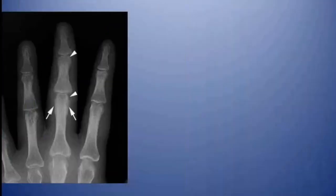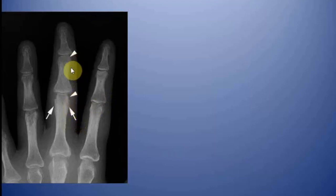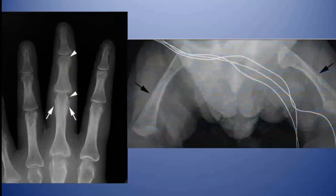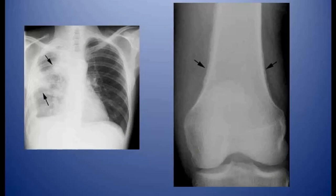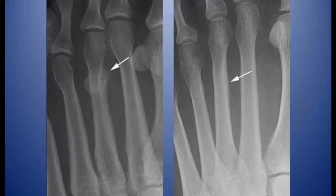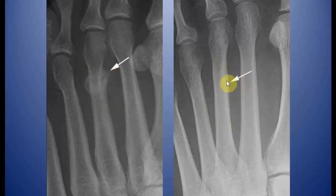Apart from tumors, multiple other entities can lead to periosteal reaction. This case of psoriatic arthritis shows thick solid periosteal reaction along with erosion. This radiograph of an infant shows physiological periostitis involving both femurs. This case of bronchogenic carcinoma has led to a paraneoplastic syndrome — the patient developed hypertrophic osteoarthropathy with periosteal reaction at the lower end of the femur. This case of a stress fracture involving a metatarsal shows an organized pattern of periosteal reaction, and after healing there is only thin solid periosteal reaction.